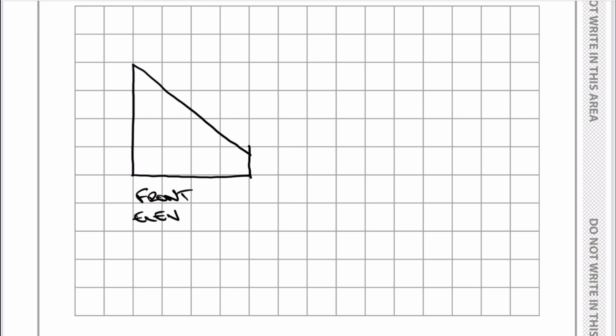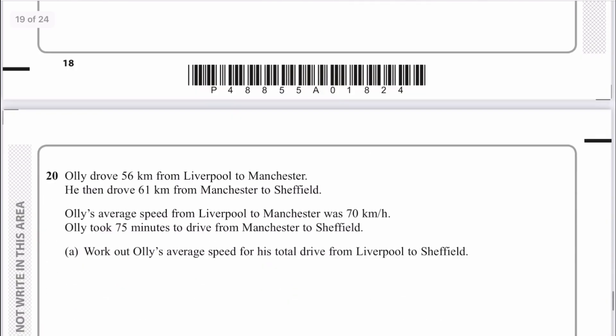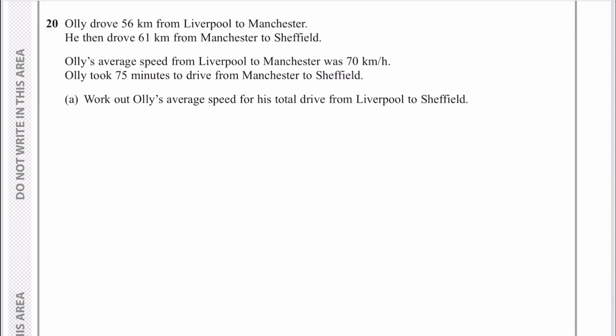That's the front elevation. The side elevation is looking at it from the side. It's going to be 2 centimeters across and 4 centimeters high. That's the side elevation and the answer to this question. Let's move on to question 20. I'm aiming for about 20 to 30 minutes on this video. Question 20 is again very wordy. Ollie drove 56 kilometers from Liverpool to Manchester and his average speed was 70 kilometers per hour.